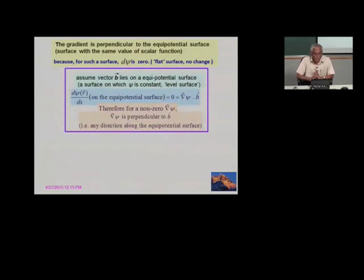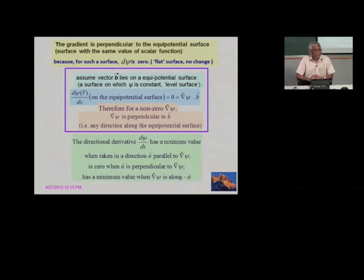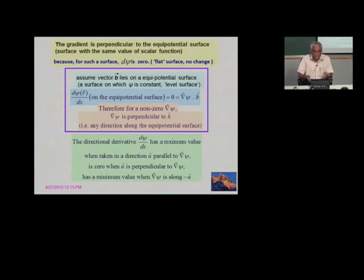The direction of the gradient is also perpendicular to an equipotential surface. On an equipotential surface, d-psi is zero — there is no change in potential, which is geometrically a flat surface. We can prove this: assume a vector lying on the equipotential surface and calculate d-psi by ds, which equals the dot product of the gradient of psi and b. For this to be zero with a non-zero gradient, it must be perpendicular to b. That proves the direction of the gradient is perpendicular to the equipotential surface.